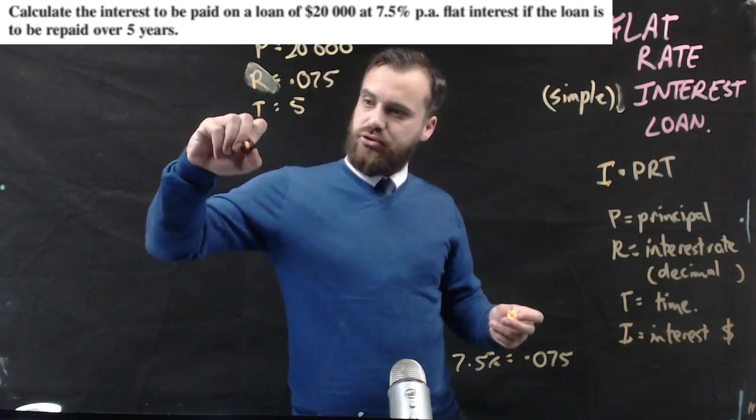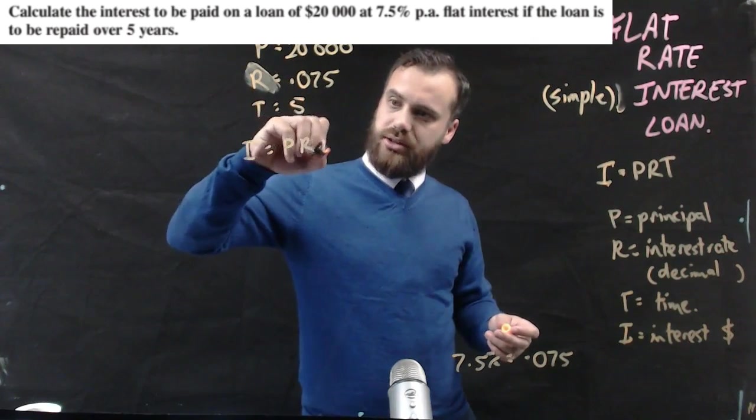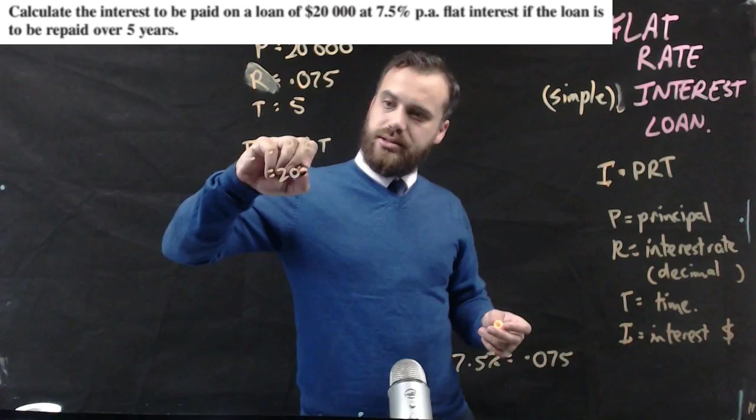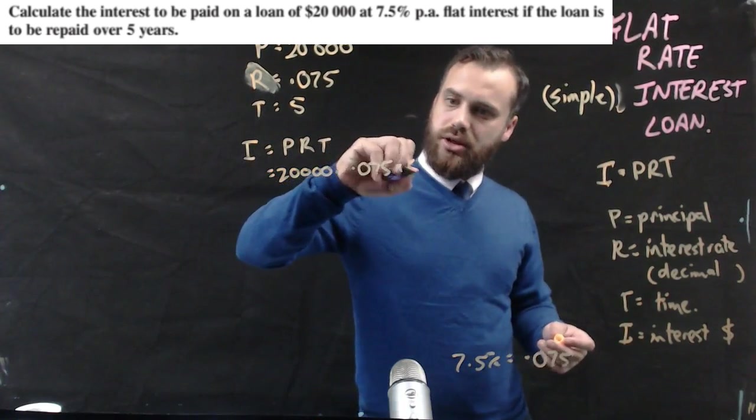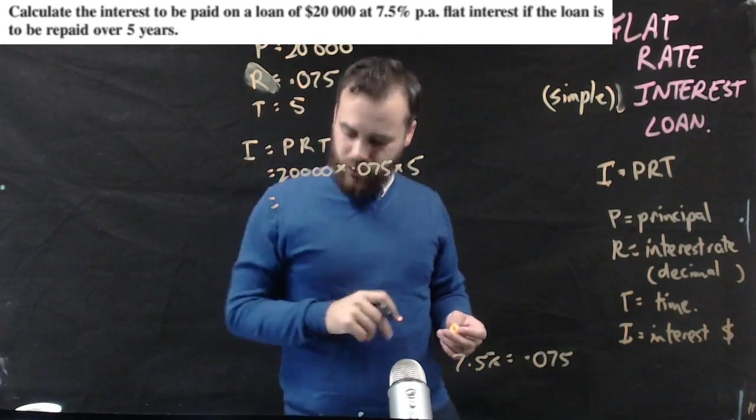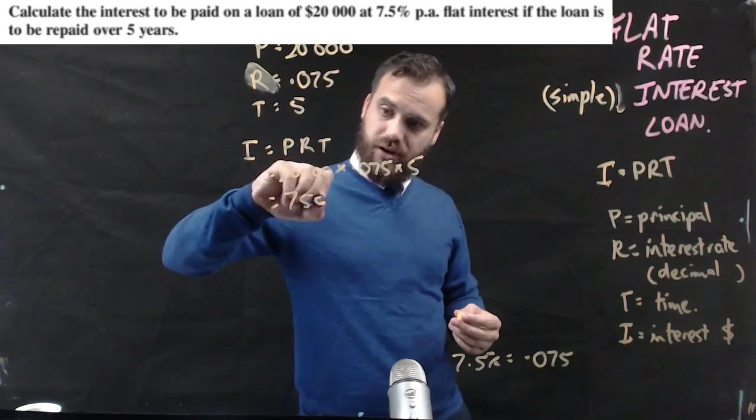Okay so interest is equal to principal times rate times time: 20,000 times 0.075 times 5. You can put all of that into your calculator and you'll get an answer of $7,500.